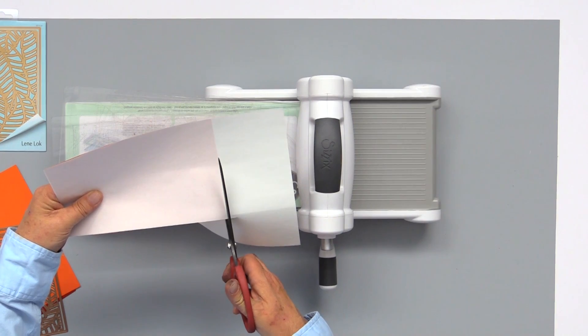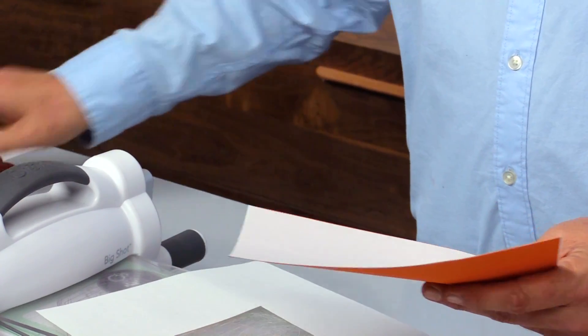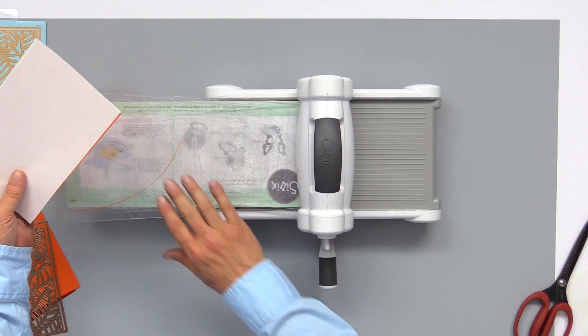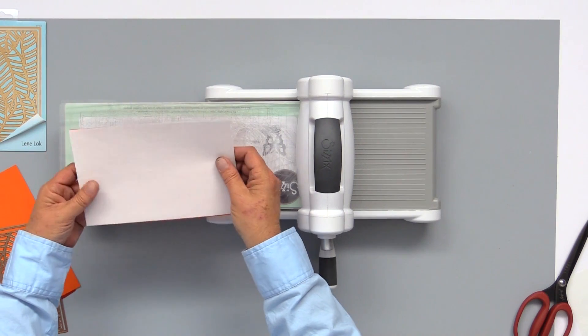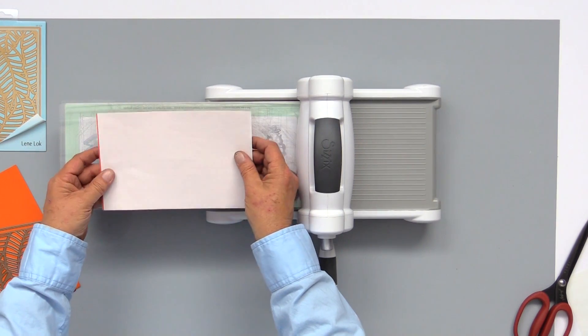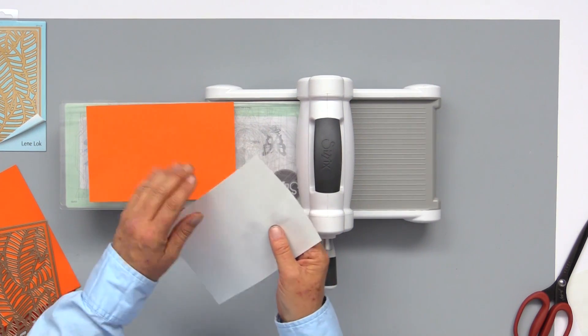A lot of times with die cuts, if you try using an adhesive pen or liquid adhesive, that liquid adhesive can leak out and create pieces of glue on your cardstock. This is going to solve all of that. So now my Stick It's the exact same size as my cardstock.